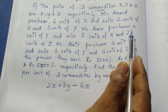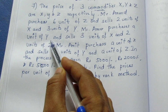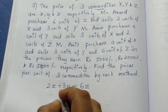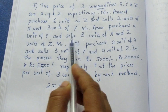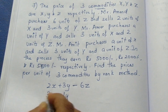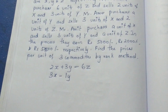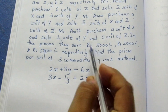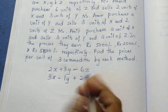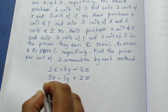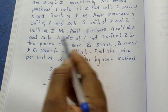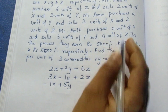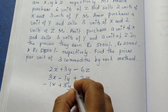Mr. Amar purchases 1 unit of Y, so that is negative, minus Y. He sells 3 units of X, so plus 3X, and 2 units of Z, so plus 2Z. The next person purchases 1 unit of X, so minus X, and sells 3 units of Y, so plus 3Y, and 1 unit of Z, so plus Z.